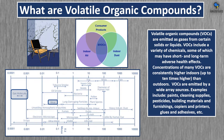VOCs are emitted as gases from certain solids or liquids. VOCs include many chemicals, some of which have short and long-term adverse health effects. The concentration of many VOCs are so much higher indoors than outside, because we are not filtering these molecules. They are emitted from many sources including paint, building materials, electronics — even the glue from your carpet will emit VOCs.